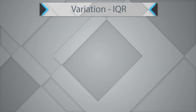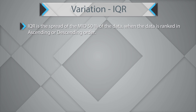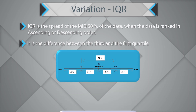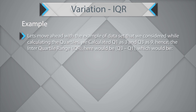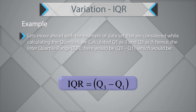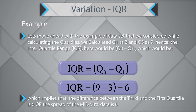The next measure of variation is the interquartile range or IQR. IQR is the spread of the middle 50% of the data when ranked in ascending or descending order. It is the difference between the third and the first quartile: IQR equals Q3 minus Q1. From the previous example, Q1 is 3 and Q3 is 9, so IQR equals 9 minus 3, which is 6 — meaning the spread of the mid 50% of the data is 6.